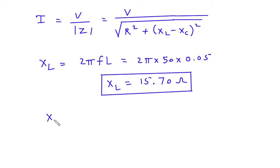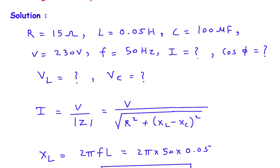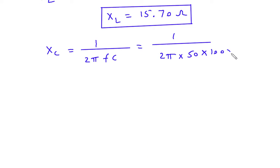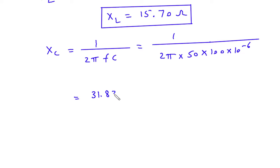Next, XC is the capacitive reactance and it is equal to 1 upon 2π FC. So this will be 1 upon 2π multiplied by frequency 50, multiplied by capacitance 100 multiplied by 10 to the power minus 6. This gives XC equal to 31.83 ohm.